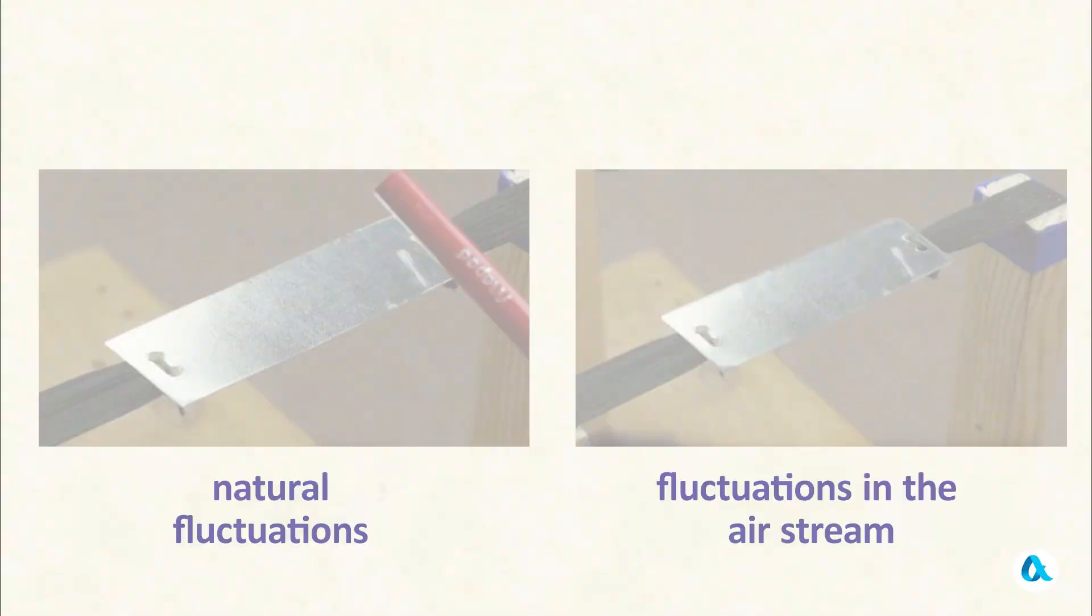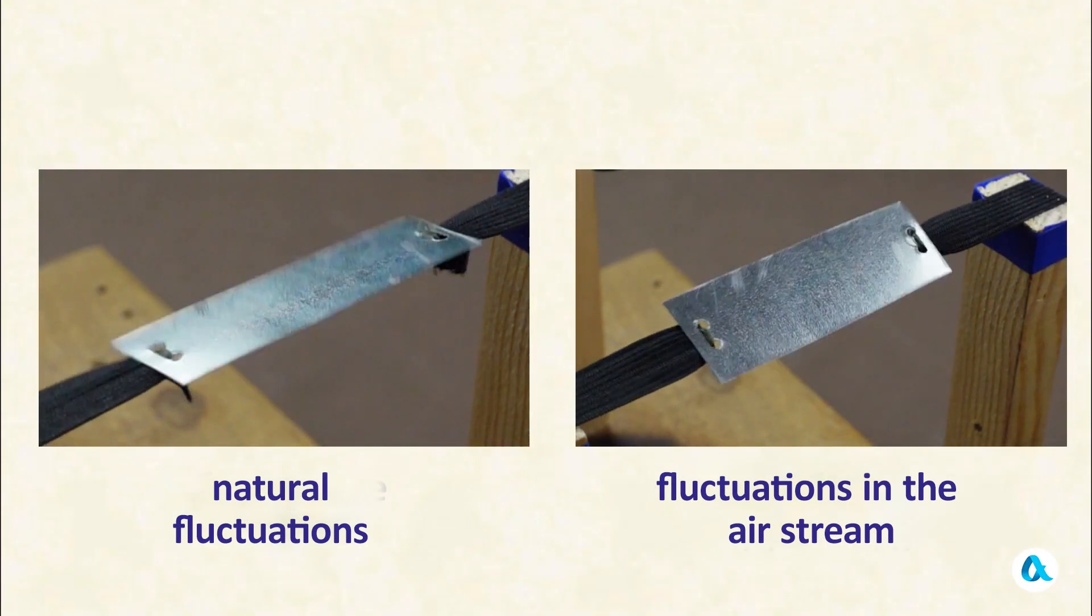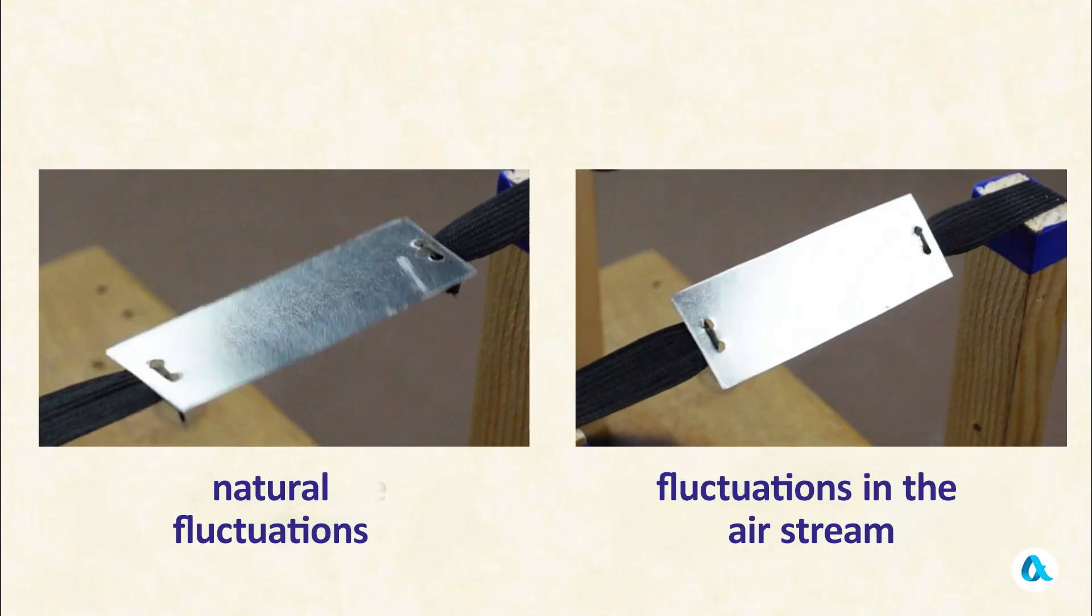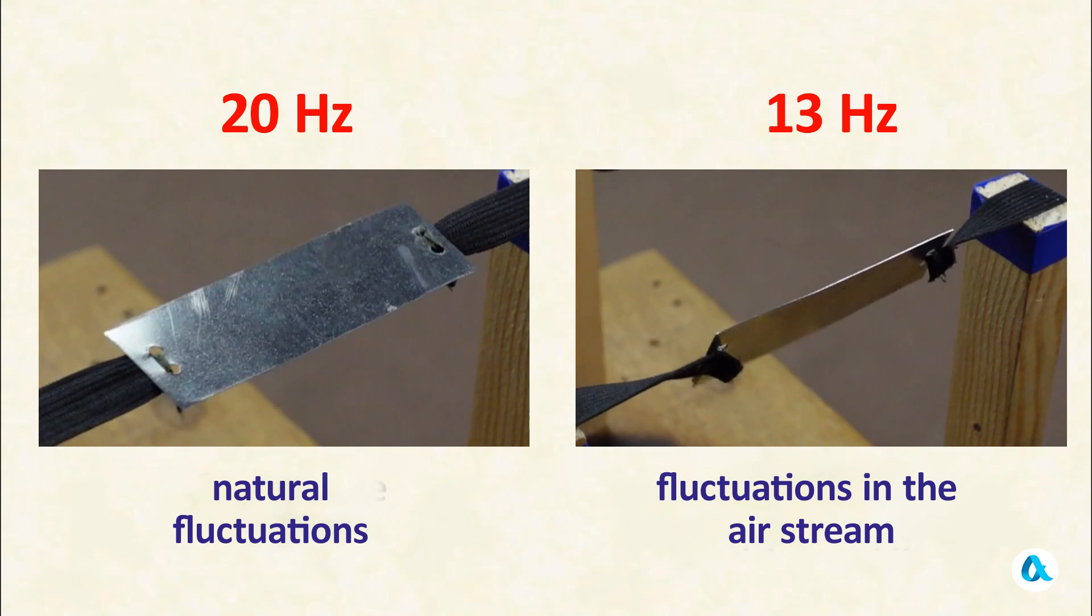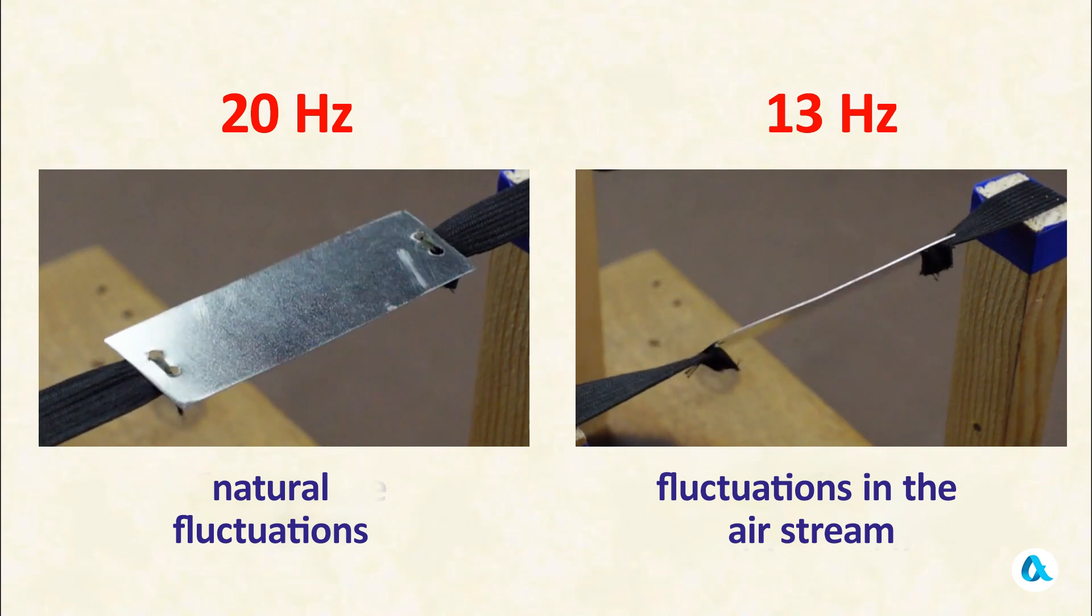We recorded these oscillations with a high-speed camera and determined that the natural frequency of the oscillations was 20 hertz, while the frequency of the oscillations in the airstream was 13 hertz, one and a half times lower.